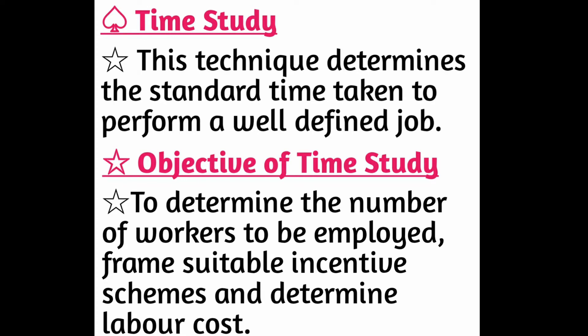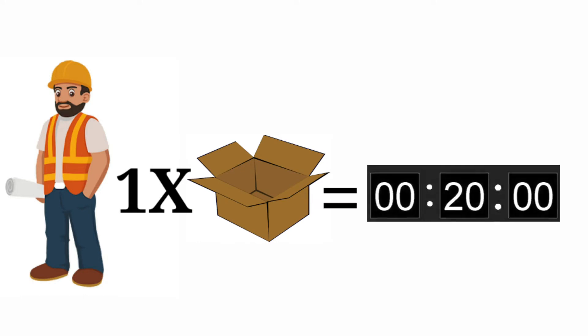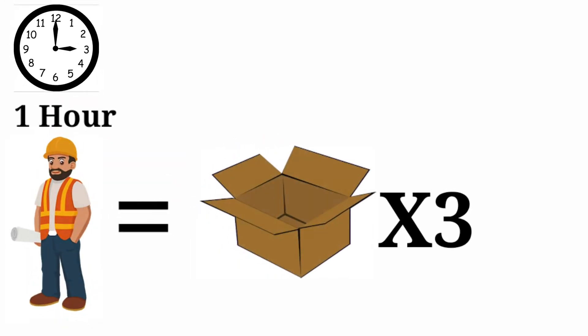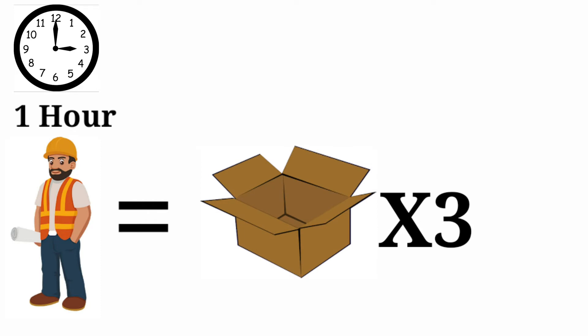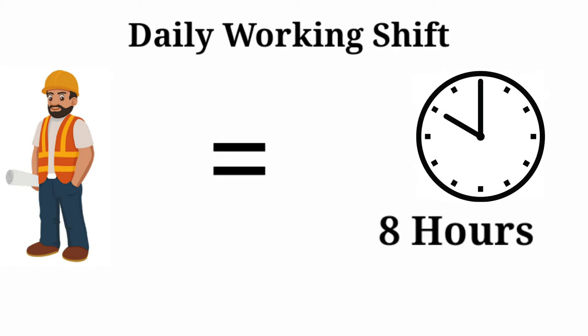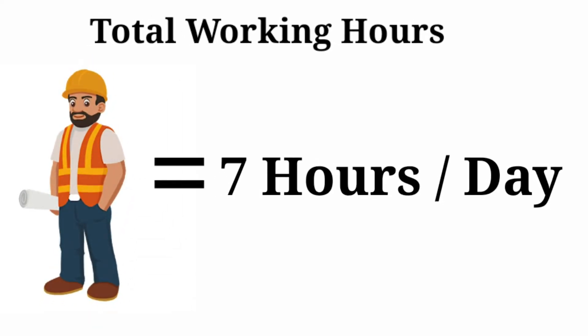For example, the standard time taken by a worker to make one cardboard box is 20 minutes. So in one hour he will produce 3 boxes. Assuming a worker's daily shift is 8 hours, and one hour is deducted for lunch and rest, the total working hours per day is 7 hours.